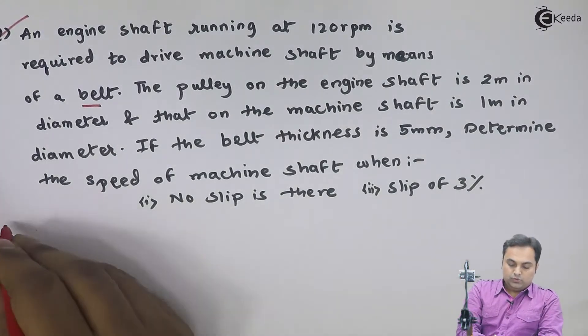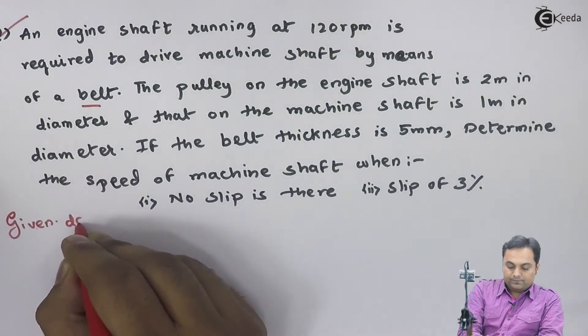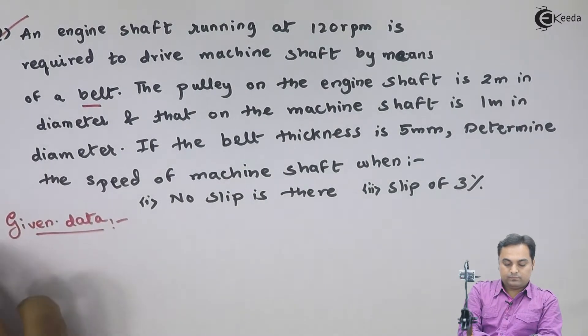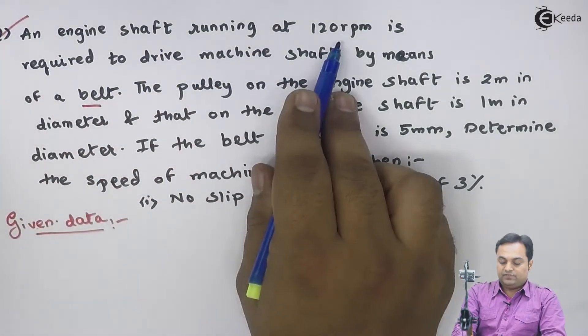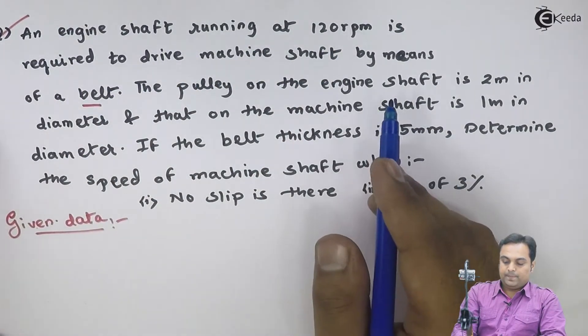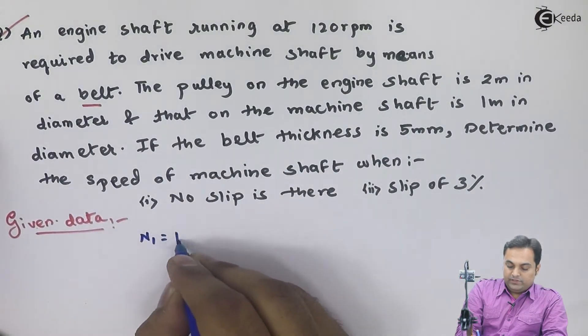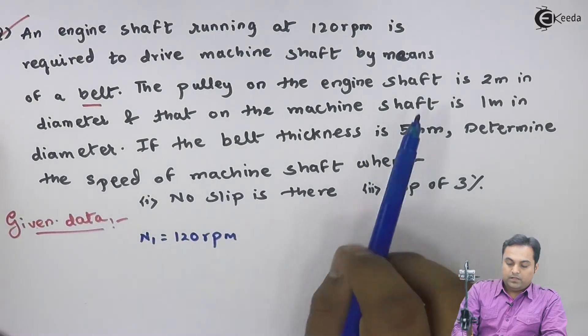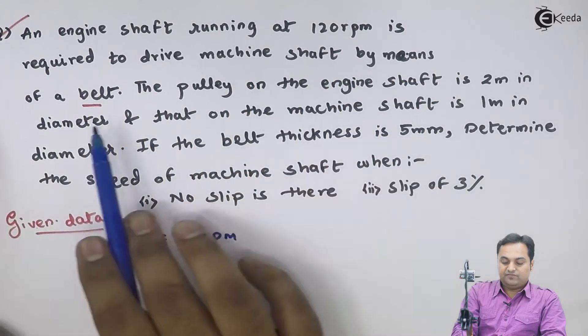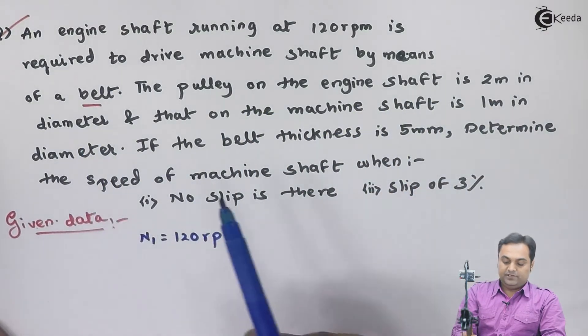So whatever they have given here, I will write it in the form of data. It is given an engine shaft running at 120 rpm, so n1 is equal to 120 because it is the driving shaft. It is required to drive machine shaft by means of a belt. The pulley on the engine shaft is 2 meter in diameter, so d1 is 2 meter.